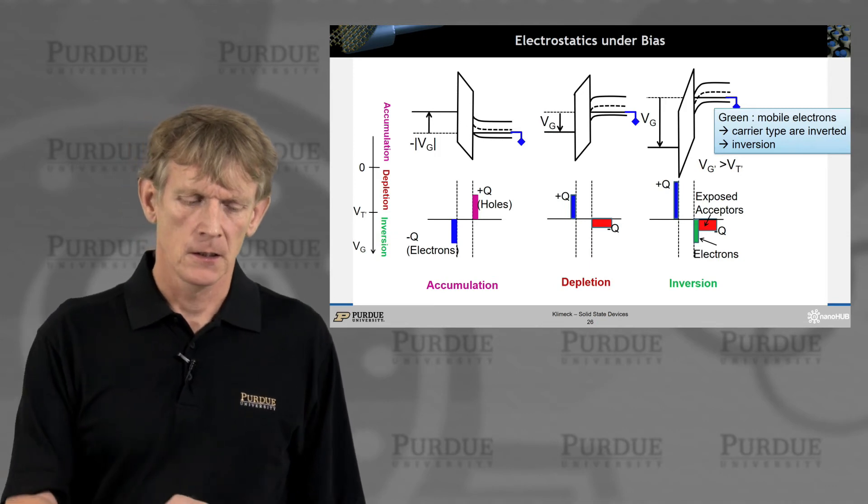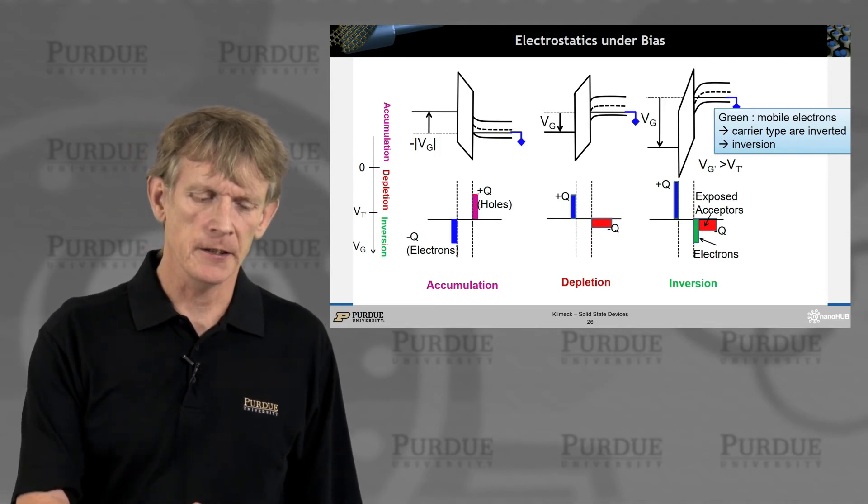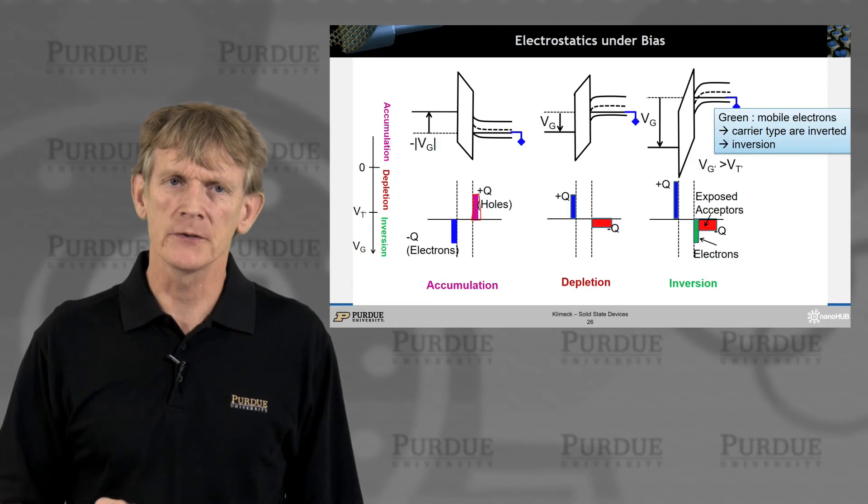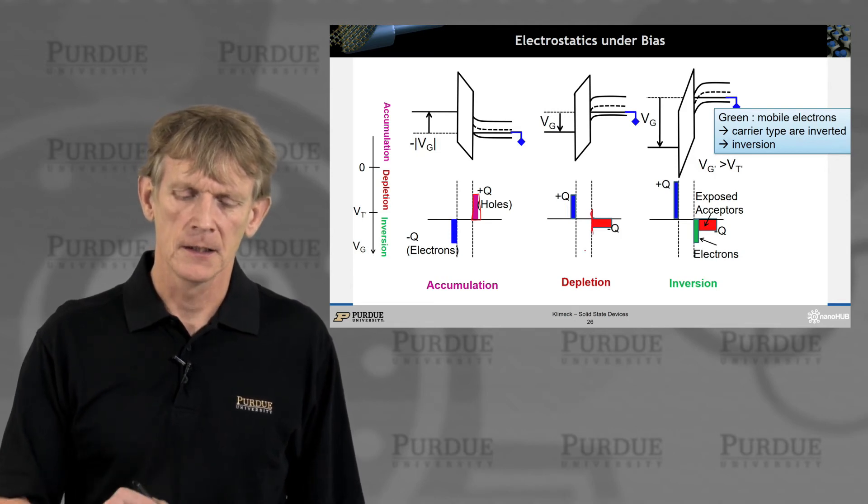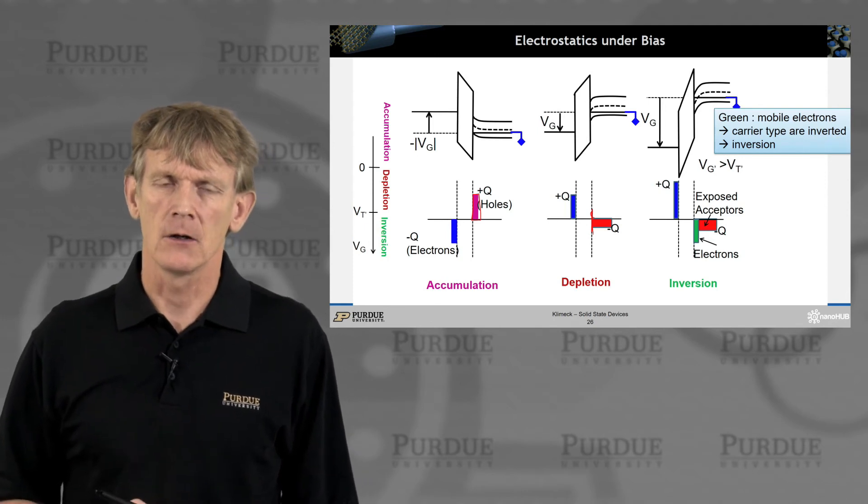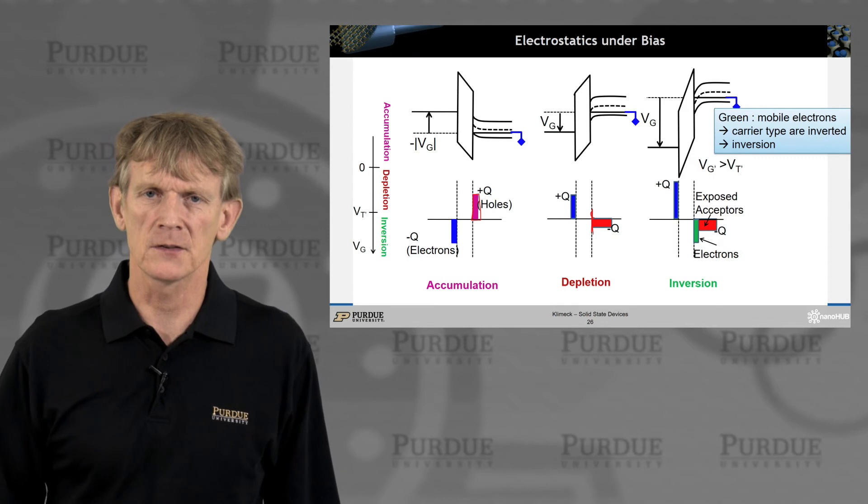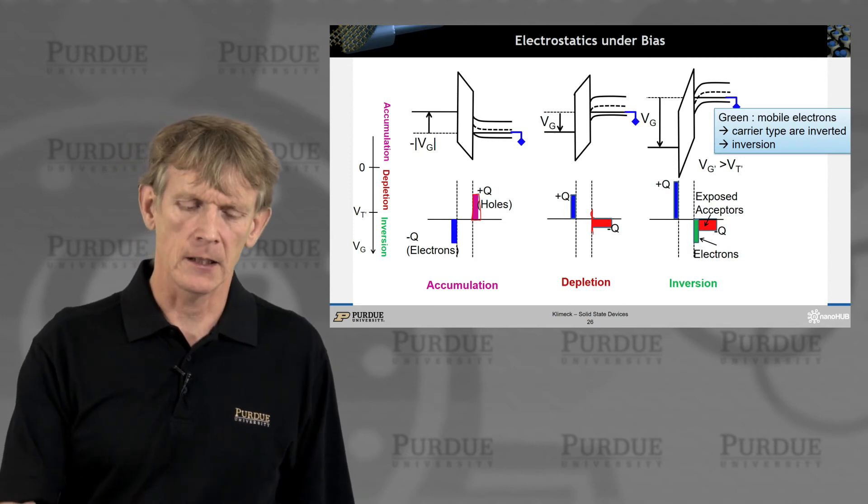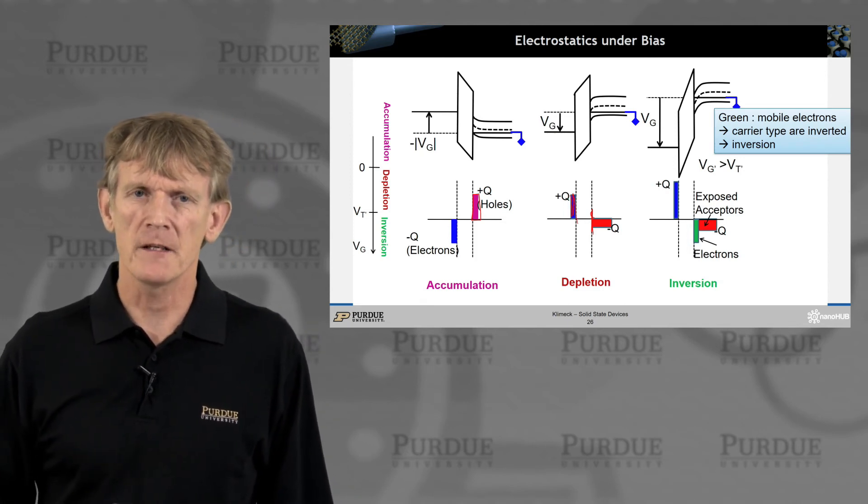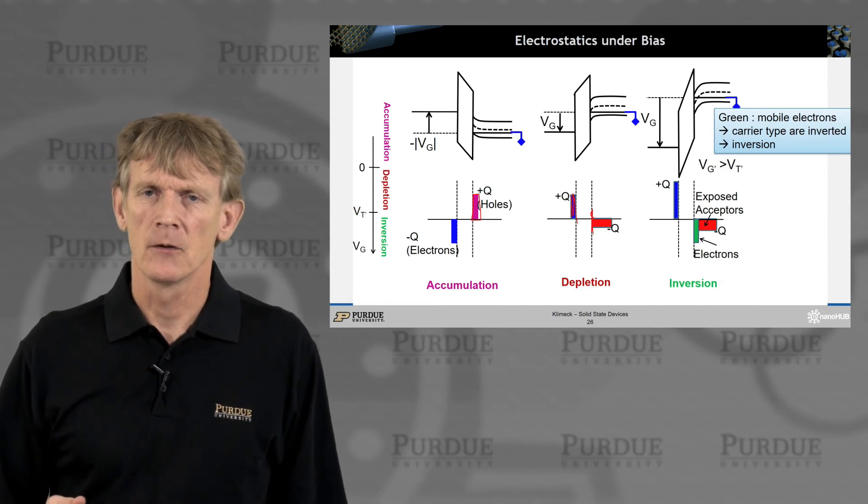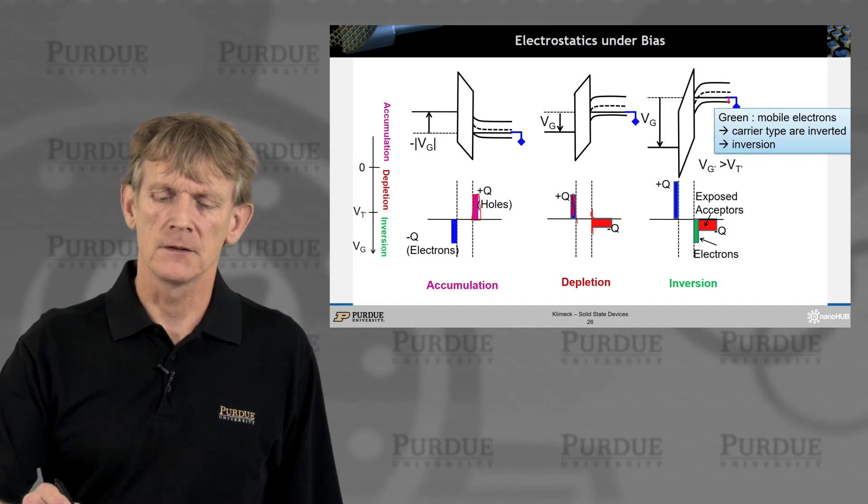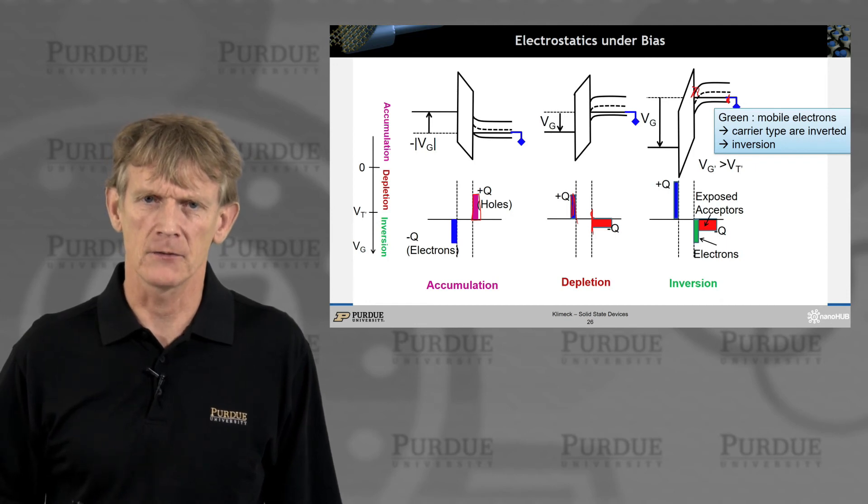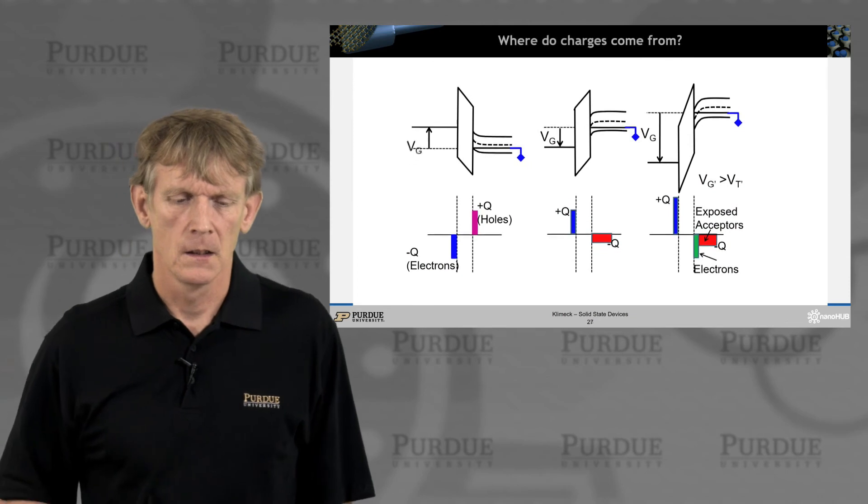So again, accumulation means we have the majority carriers here, holes piling against the interface. Depletion means there's no electrons, no holes in the semiconductor close to the interface at all. All we have is an exposed layer or region of dopants. In this case, they are acceptors, negative charge. And we have electrons that are piled up on the metal side here. For an even higher bias, we go into inversion. We go from the dopant determined P-type level into electron densities where electrons are piled up at this interface. That's called inversion.